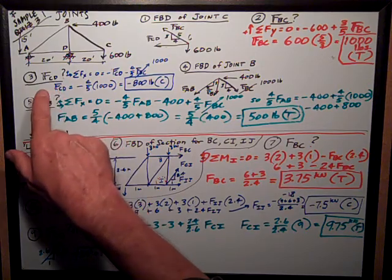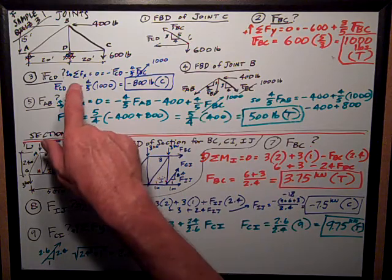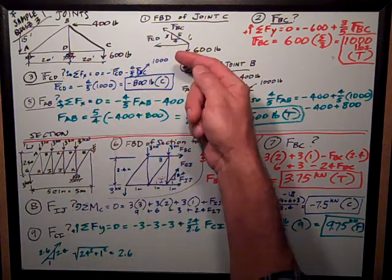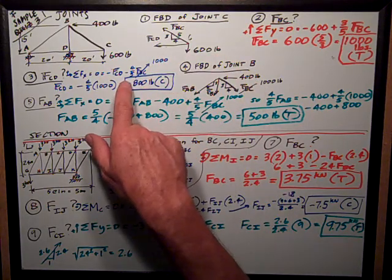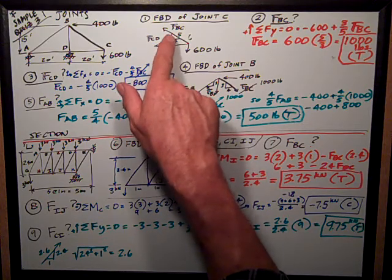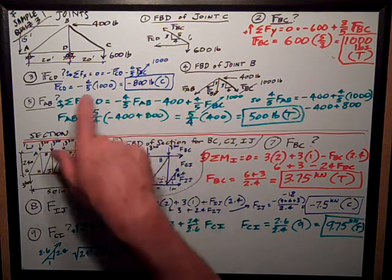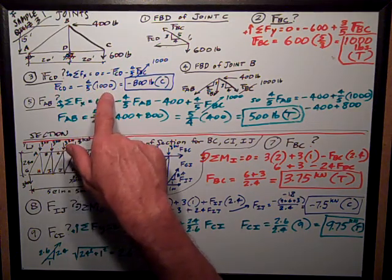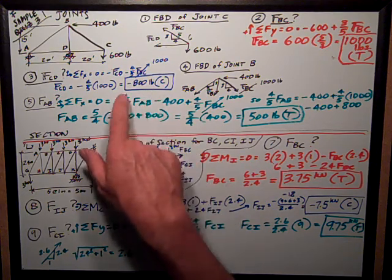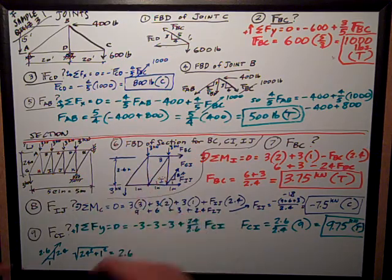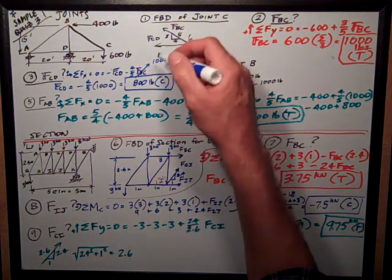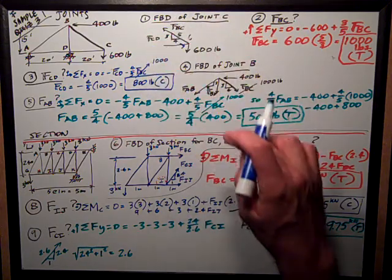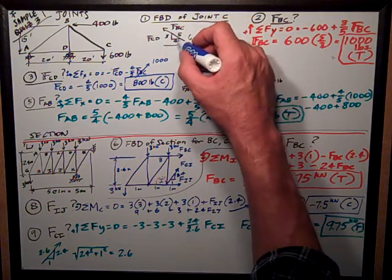Problem number three is, find the force in the member CD, going back to joint C. Now, I can sum forces in the X direction, assuming positive to the right, that's equal to zero. I have negative FCD because it goes to the left, minus the four-fifths component of FBC, which I now know is 1,000 pounds. I can rearrange this equation. FCD is equal to negative four-fifths of 1,000 pounds, so that's negative 800 pounds. So I would erase my negative sign and I would write compression. If I was going to keep on solving this truss, I would change the sign of my FCD to be compression, or pushing on the joint, and I would erase it as being a tension force.